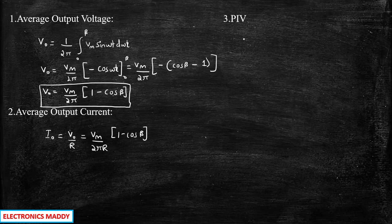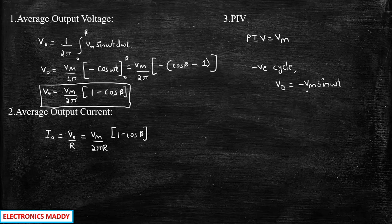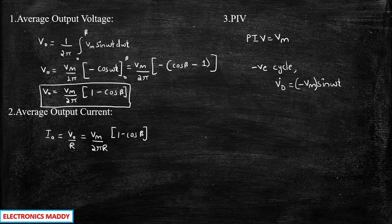The peak inverse voltage for RL load is similar to that of R load and equals Vm. During the negative half cycle, the diode is reverse biased at some point, and the maximum supplied voltage across the diode was minus Vm sin omega t. We consider only the magnitude, so the peak inverse voltage — the maximum voltage available across the diode during reverse bias condition — is Vm.